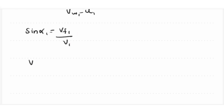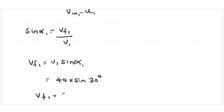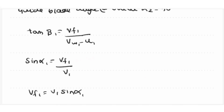Therefore vf1 is equal to v1 times sin alpha 1, which is 40 times sin 30 degrees. So vf1 is equal to 20 meter per second.